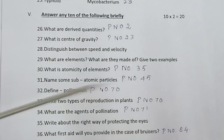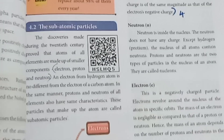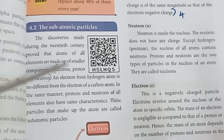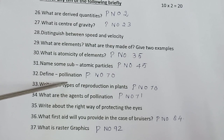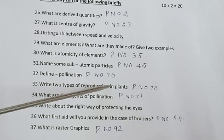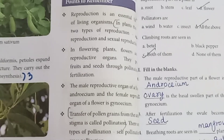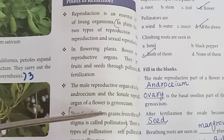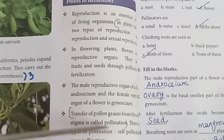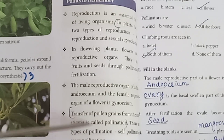Question 31: Name some subatomic particles. Refer to page number 45. Electron, proton, and neutron. Question 32: Define pollination. Refer to page number 70. Pollination is the transfer of pollen to the stigma.